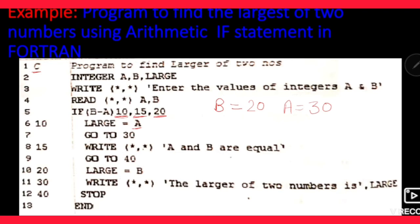Uske baad, agle line mein dekho kya likha hai: GO TO 30. Is statement ke baad GO TO 30 likha hai — seedha control statement number 30 pe jaayega. 30 number statement mein dekho kya likha hai: WRITE — 'the larger of two numbers is large.' Matlab, jab B minus A ki value negative thi, to pata chal gaya ki larger number A hai, large ki value A ho gayi. Ab use display karna hai, to uske liye hume WRITE statement pe jaana hai, isliye GO TO 30 likhna zaroori hai.